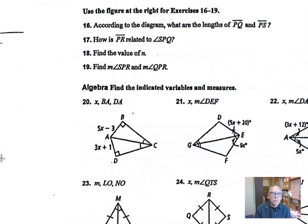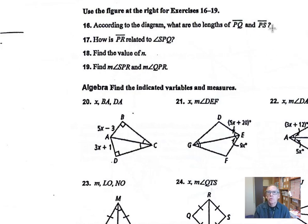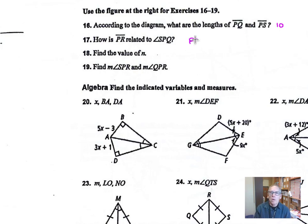Let's look at number 16. According to the diagram, what are the lengths of PQ and PS? PQ is 10, so PS must also be 10 since they are marked as congruent. How is segment PR related to angle SPQ? PR is perpendicular to the base — it's a perpendicular bisector of the base — so a perpendicular bisector of the base of this triangle is also an angle bisector of angle P. Therefore PR bisects angle SPQ.